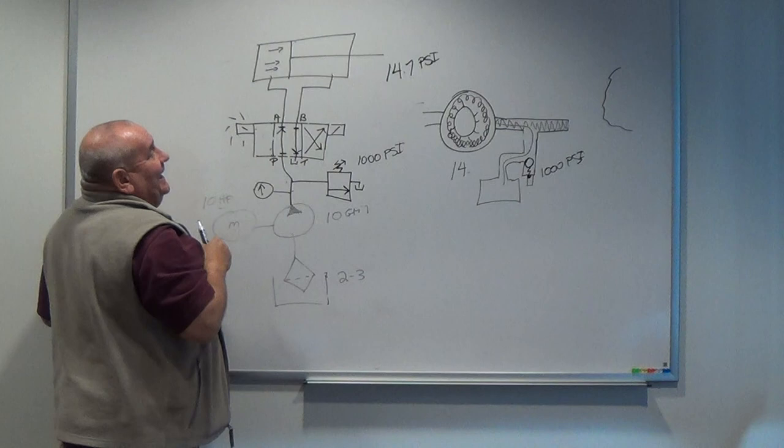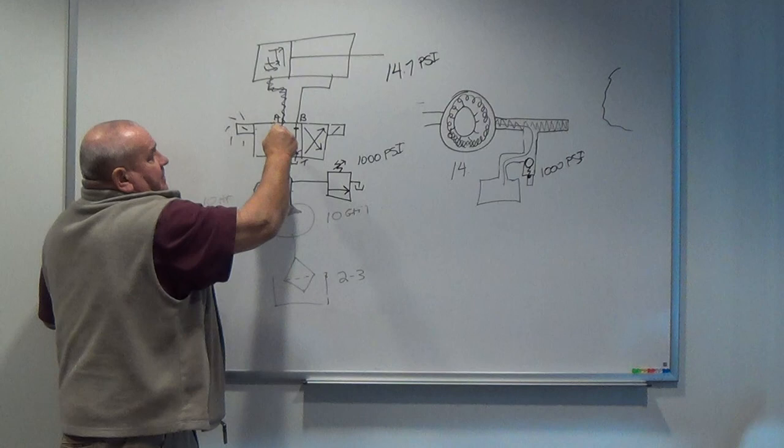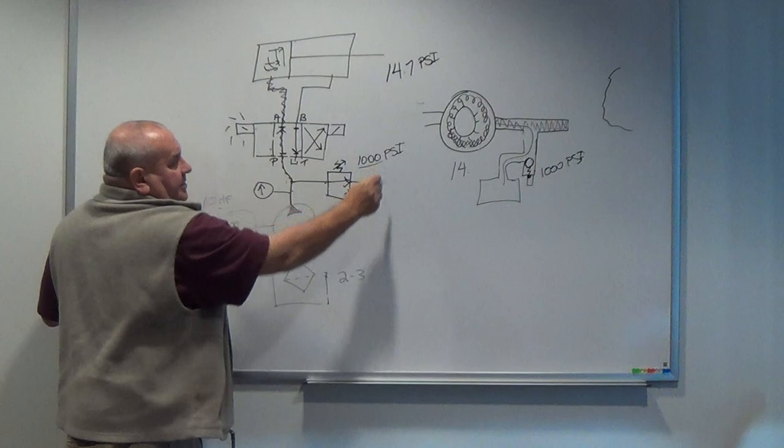So my flow is coming through here, my cylinder extends. At the end of my extension stroke, pressure begins to build. It builds down in through here. It's going to build over here into this chamber. This unit will now open and it will dump at 1,000 psi. So I can do a certain amount of work with that particular setup.